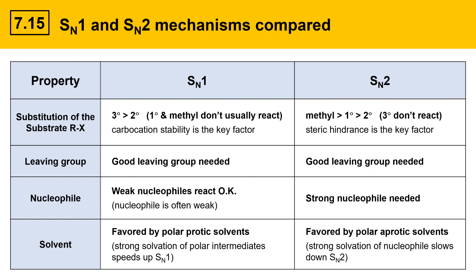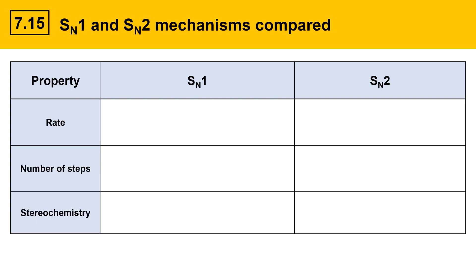This is a table that would be a good idea to memorize. There's just so much useful information here that you'll need to know this to keep the reaction mechanism straight when you're working problems. On the next slide, we'll take a look at a couple of other properties that are important in SN1 and SN2 mechanisms.